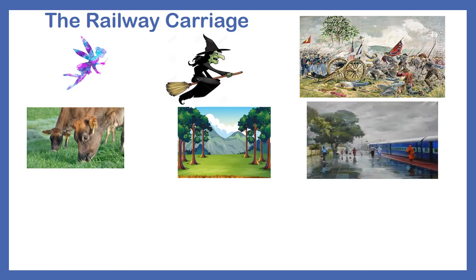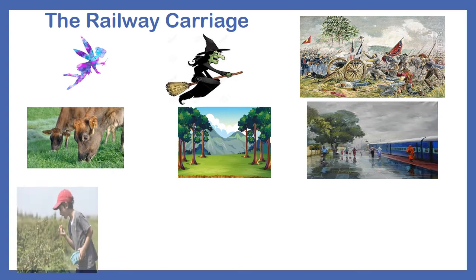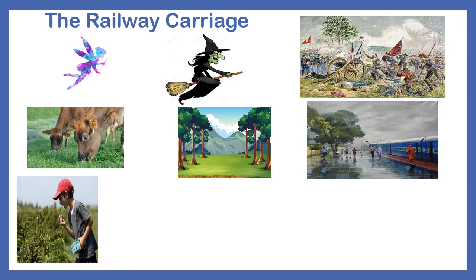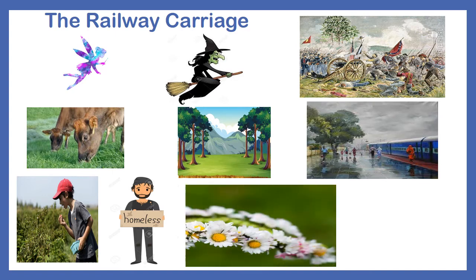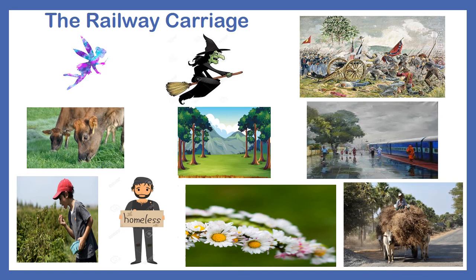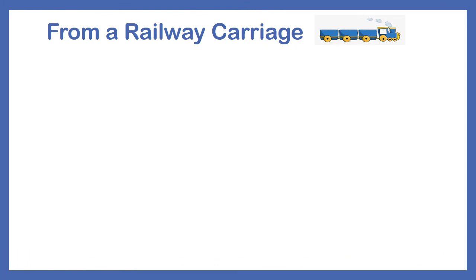In the second stanza, the poet sees a child collecting berries and a homeless person who looks at the train with amazement. As the train moves forward, he sees some ladies in a village making garlands with daisy flowers. The poet then sees a cart moving slowly, full of load. He also gets a glimpse of the mills and a river by its side. All these things appeared and disappeared so quickly.